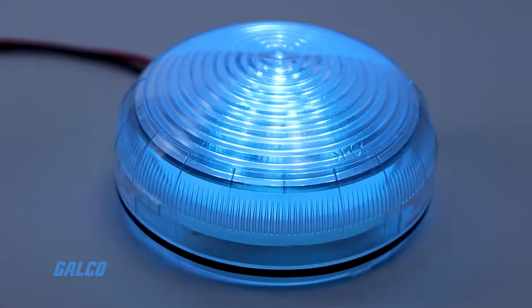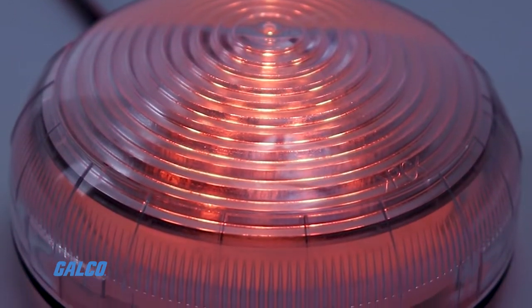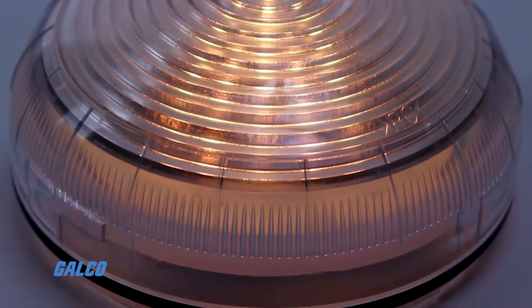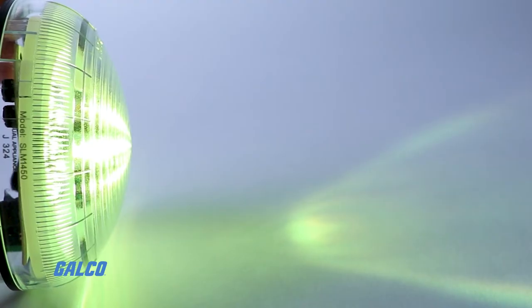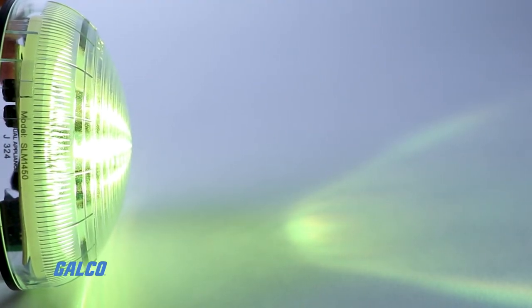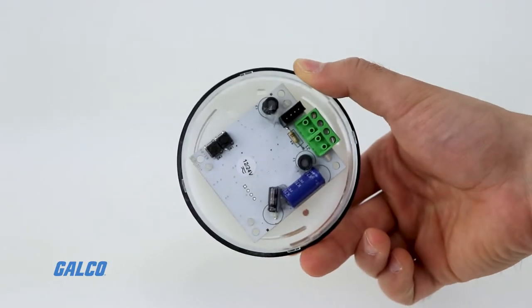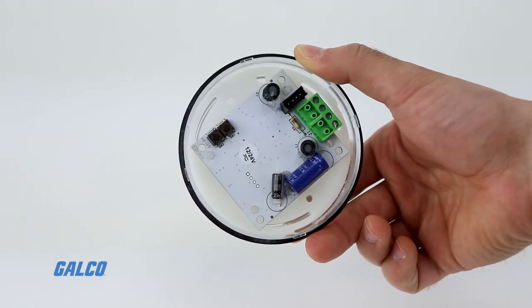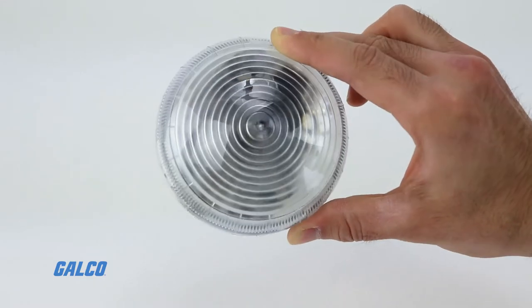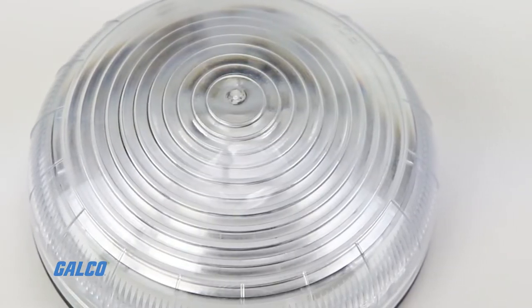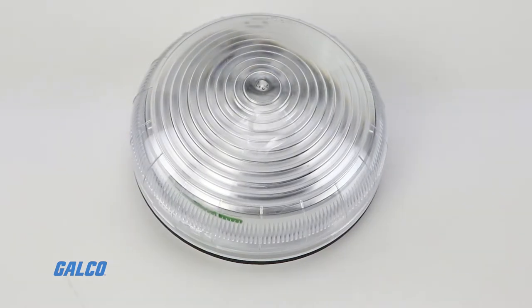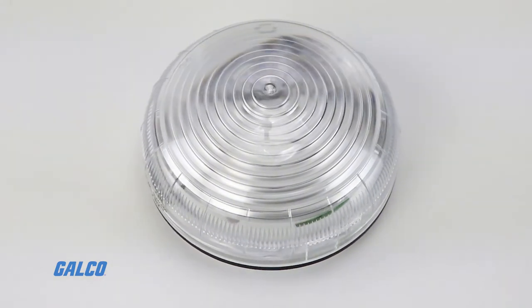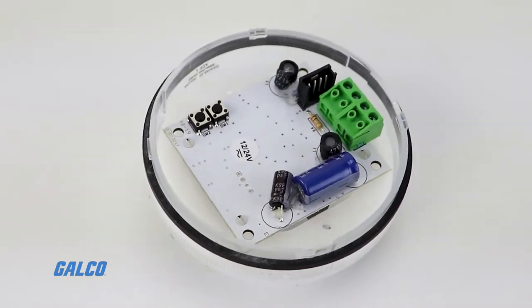The SLM1450 is built with a Fresnel lens, which concentrates light into a narrow beam and is more useful for long-distance signaling. The enclosure material is a self-extinguishing polycarbonate that has high impact resistance, UV resistance, and pairs with one of the five base options for IP66 or IP69 protection.